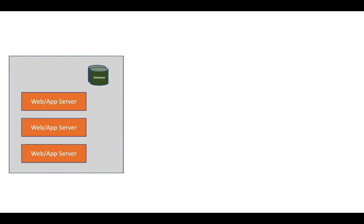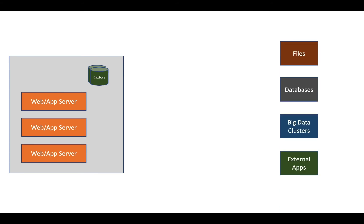These are the two crucial data sources which generate data for our analysis. The targets where data has to be loaded can be files, databases, data clusters, external applications, and so forth. Files are typically used when we want to give data to some external application not part of the organization. There has to be a framework so that we share data at regular intervals with external vendors. The target can also be a database — it can be a data warehouse, basic database, or traditional RDBMS — so that we can utilize data further.